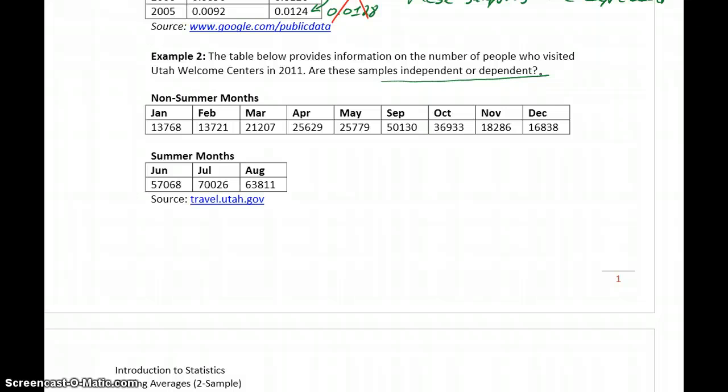In this case, let's start off with the assumption that they're dependent. If they're dependent, that would mean we'd have to be able to make pairings between the first data set and the second data set. Say for instance, January and June have some paired relationship, February and July have some paired relationship, March and August, and then we would get to April and we would run out of values in that second data set.